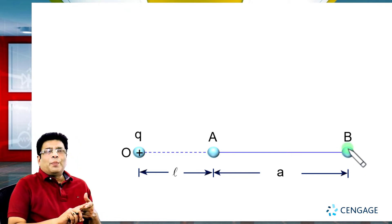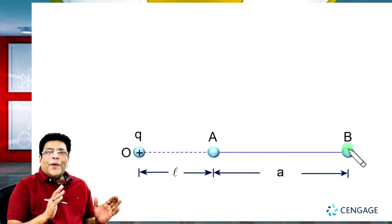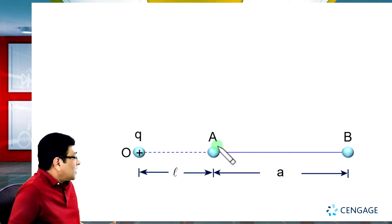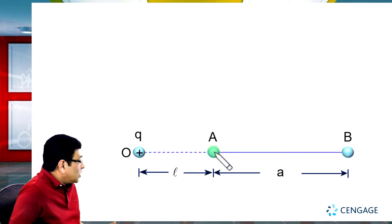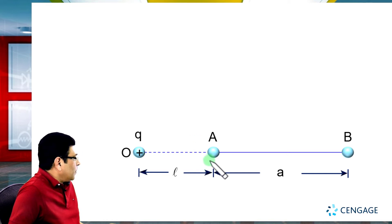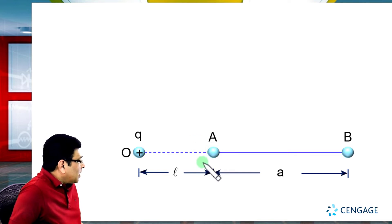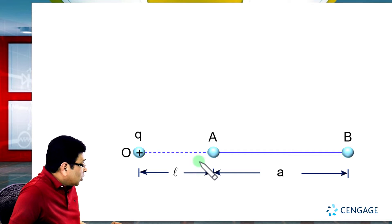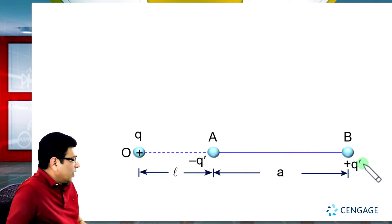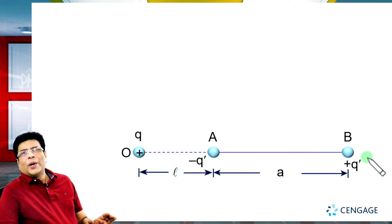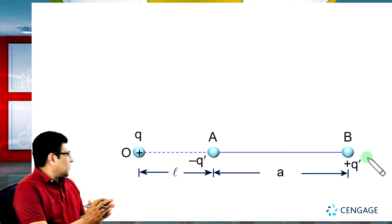The left side of the sphere will become negatively charged and the right side positively charged. We know that induced charge cannot form a net charge — the summation of the charges induced on both spheres should be zero. So we assume that sphere A has charge minus q dash and sphere B has charge plus q dash. These are the induced charges.